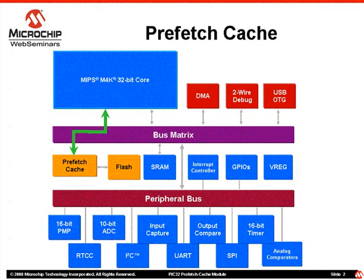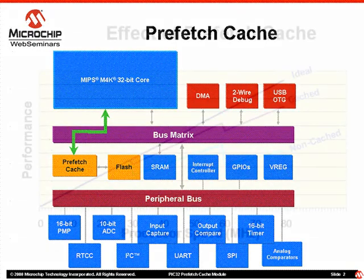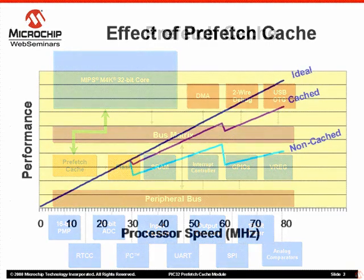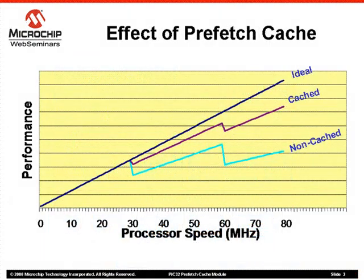This block diagram shows where the Prefetch Cache Module is located in the overall system block diagram. With that brief introduction, let's see why the Prefetch Cache Module is important. This graph shows three different scenarios.